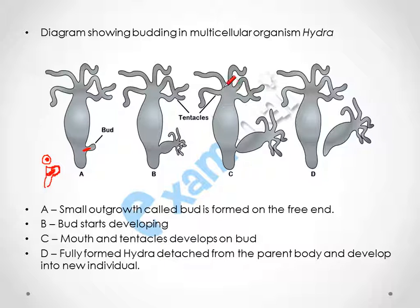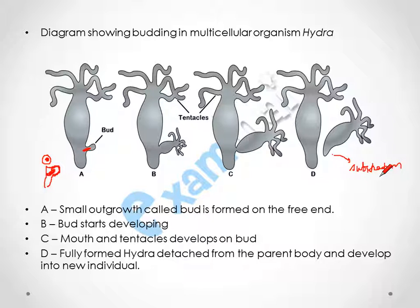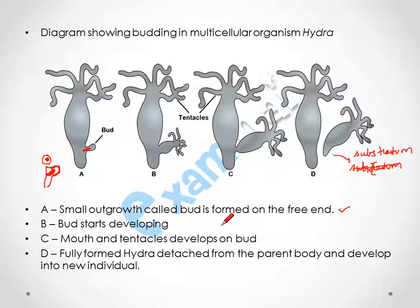When this new hydra grows and matures into an individual, it will detach from the parent and get attached to the substratum, developing into a new individual. The steps are: a small outgrowth called a bud is formed on the free end; the bud starts developing; mouth and tentacles develop on the bud; the fully formed hydra detaches from the parent body and develops into a new individual.